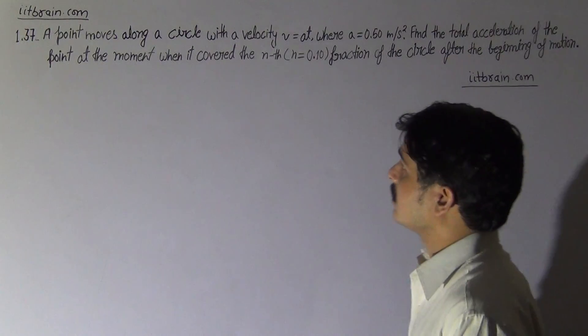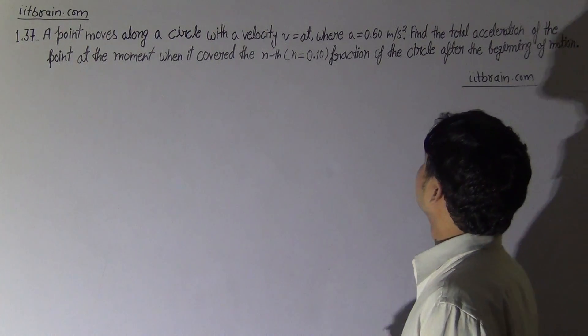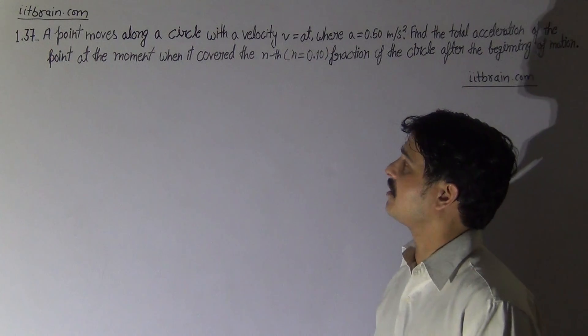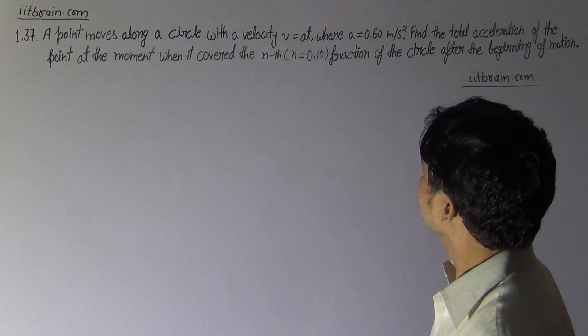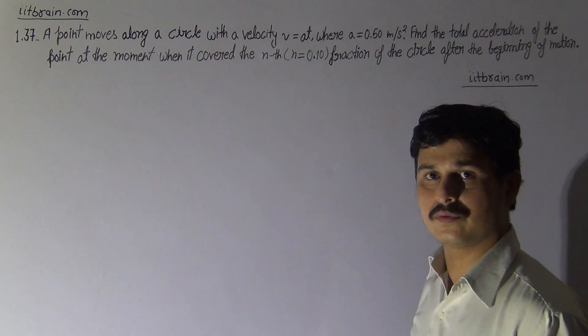Hello students, this is problem 1.37. A point moves along a circle with a velocity V equal to at, where a is 0.5 m/s². Find the total acceleration of the point at the moment when it covered the nth, n is 0.1, fraction of the circle after the beginning of motion.